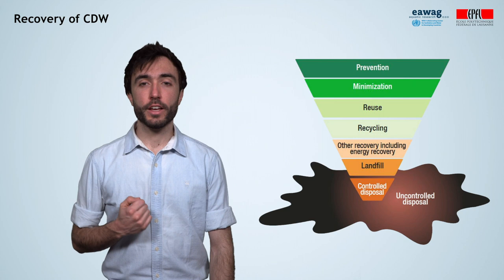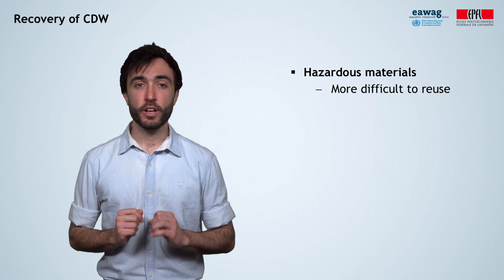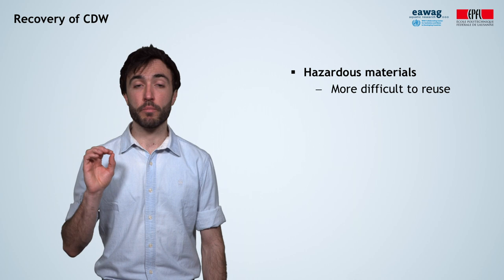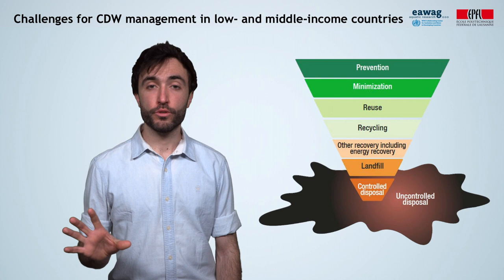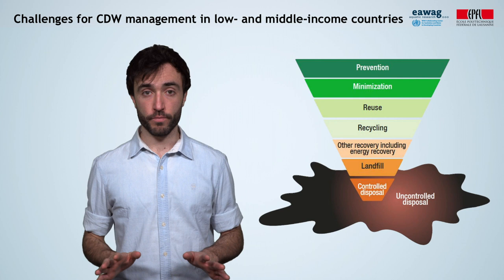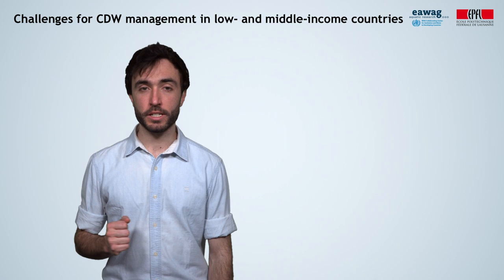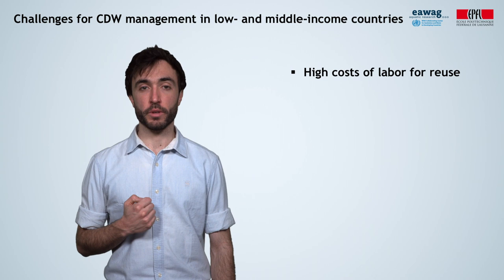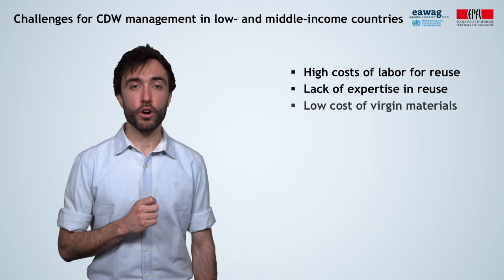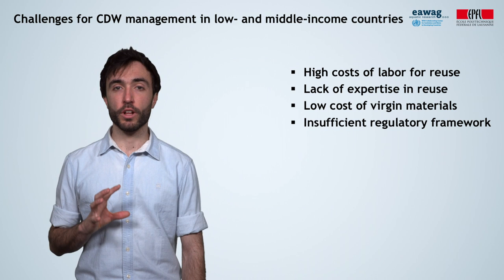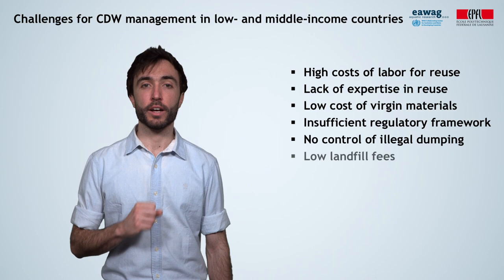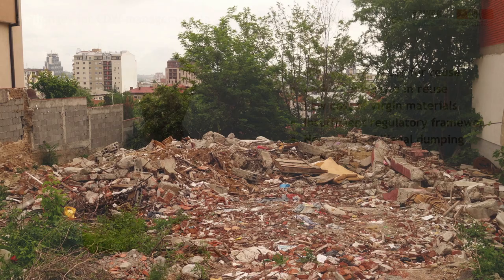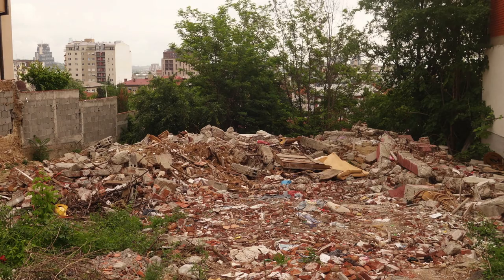The next step in the hierarchy is to recycle or recover any materials. It is important to mention that when buildings or civil structures contain hazardous substances, they become much more difficult to reuse or recycle. When neither reuse nor any sort of recovery is possible, the waste needs to be disposed of. This is still the most common practice in low and middle income settings, mainly due to the high costs of labor needed for reuse, the lack of expertise in reuse practices, the low cost of new or virgin materials, the insufficient regulatory framework, lack of control over illegal dumping, and low landfill fees.